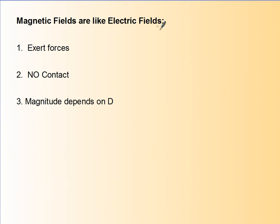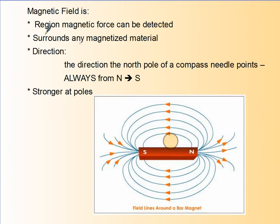Magnets are like electric fields in many ways. They exert forces with no contact whatsoever and the magnitude depends upon the distance you are from the magnet. A magnetic field is the region around a magnet where the magnetic force can be detected, and it surrounds every magnetic material. The direction is always from north to south. You can think of north as positive and south as negative, and the field is always strongest at the poles and gets weaker as you move further away.